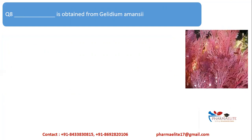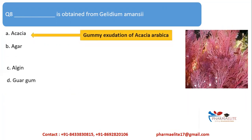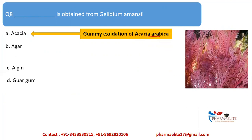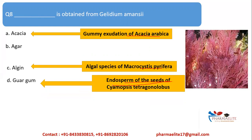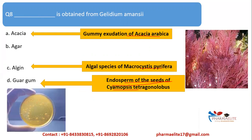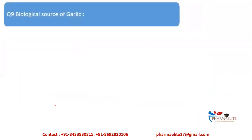Next question: dash is obtained from Gelidium amansii. This is a picture of Gelidium amansii — what do you obtain from it? Options are Acacia, Agar, Algin, or Guar gum. Acacia is a gummy exudation from Acacia arabica. Algin comes from algal species like Macrocystis. Guar gum is obtained from the endosperm of seeds of Cyamopsis tetragonoloba. Agar is what we see in this picture — obtained from Gelidium amansii. The correct answer is option B: Agar.